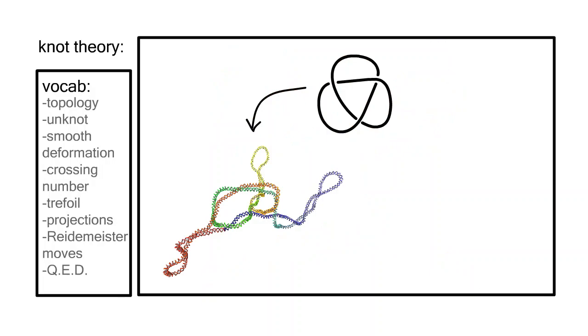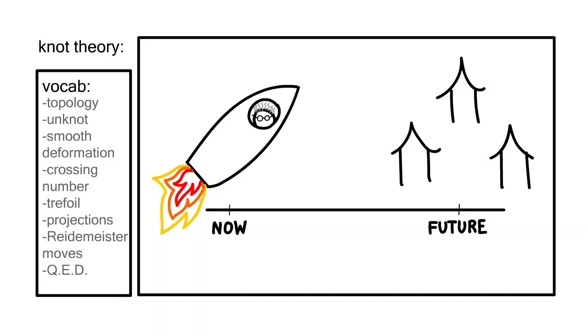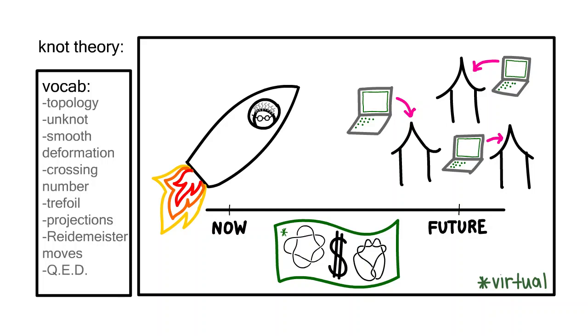How about counterfeiting? Could we use knots to make money more secure? Some professors suggest that in the future, when quantum computers are more prevalent, quantum money will be encoded with knots. Instead of today's verification methods, an algorithm will check the knots on each virtual dollar and cent.